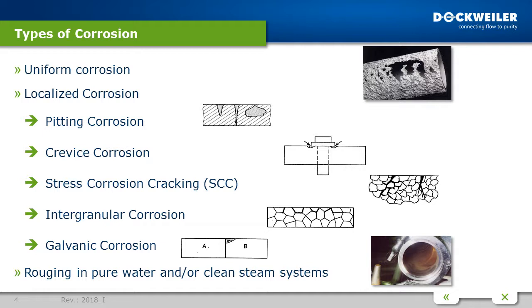The last form of localized corrosion of interest is galvanic corrosion. Every metal has a defined corrosion performance. When two dissimilar materials are brought into electrical contact and immersed in a conductive liquid electrolyte, their corrosion performance may differ significantly compared with the uncoupled metals. As a rule of thumb, the less noble material will corrode when different metals are in contact with each other.